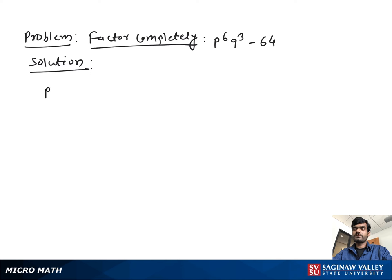Factor completely P to the 6th Q to the third minus 64. If we see both terms are perfect cubes, we can write this as (P squared Q) all to the third minus 4 to the third.